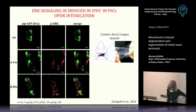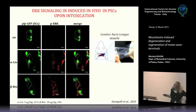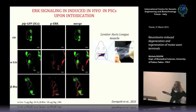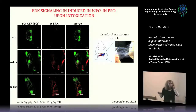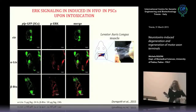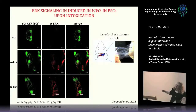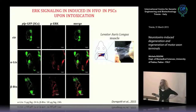We then moved to the in vivo situation. Using transgenic mice expressing green fluorescent protein specifically in Schwann cells, we injected the toxins locally at the level of the levator auris longus muscle — a very thin muscle behind the ear, ideal for imaging. We collected muscles at different time points and detected ERK activation specifically in Schwann cells of toxin-injected muscles, whereas no activation was present in the control.